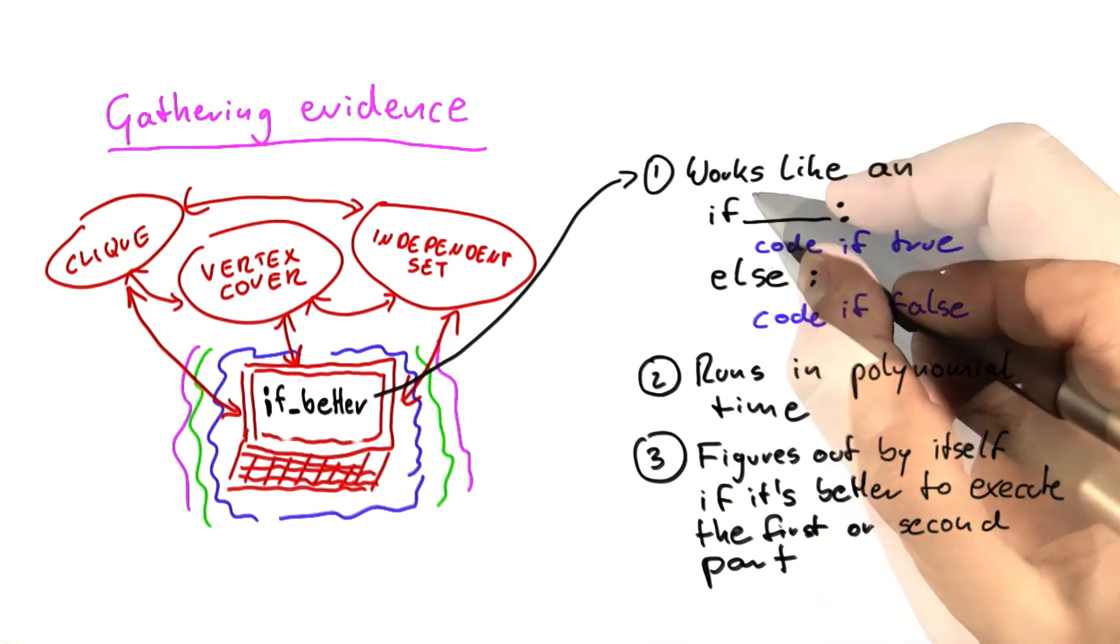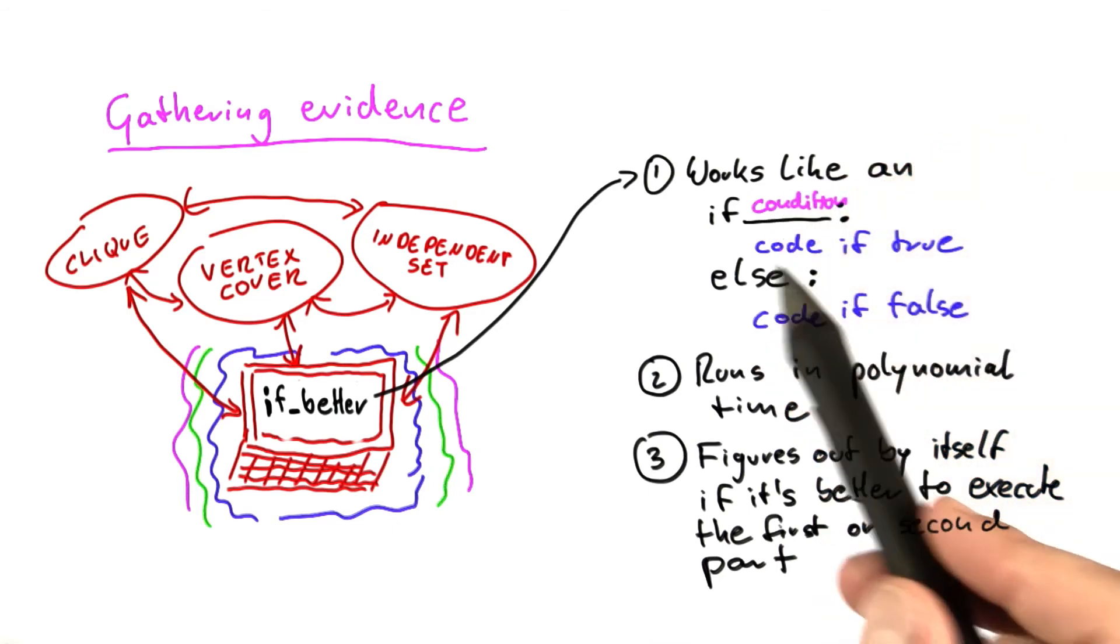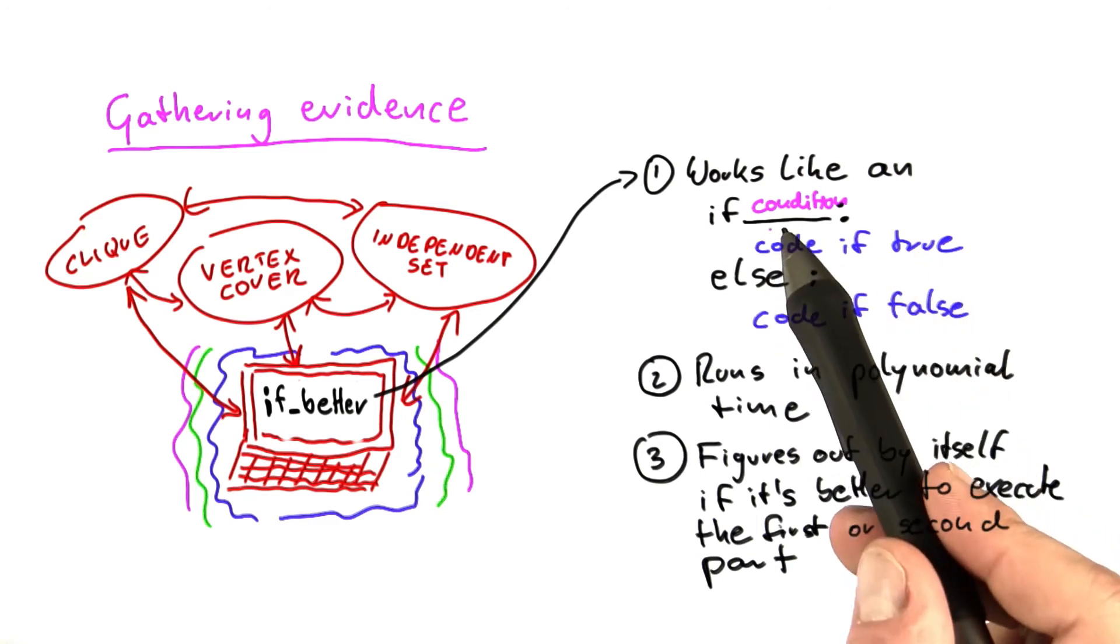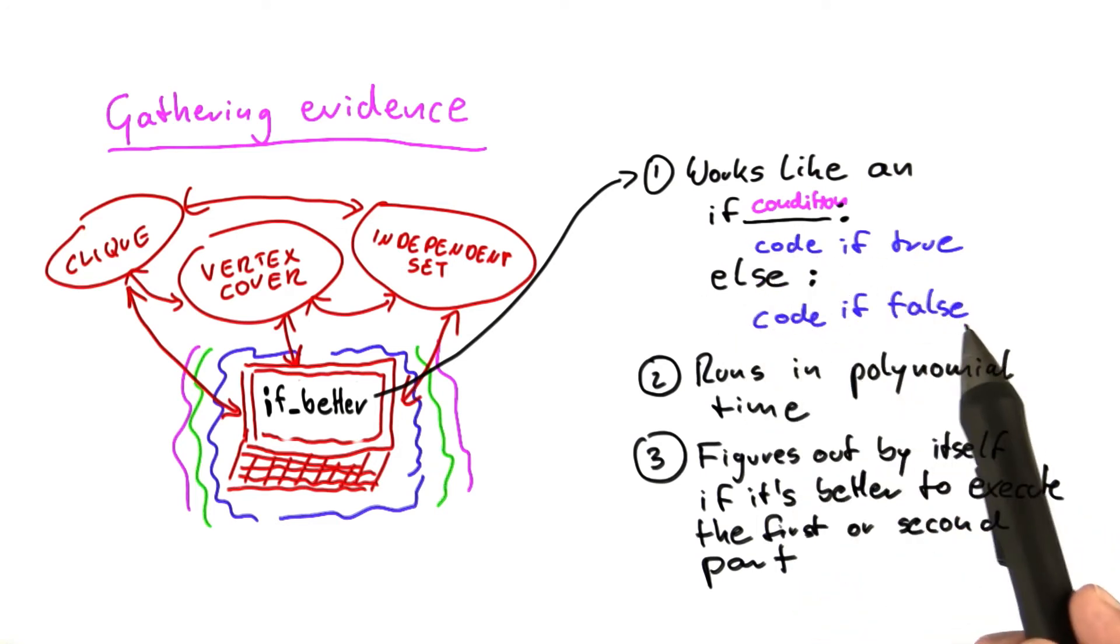Normally, when you have an if, you would have to specify some condition here so that if the condition is satisfied, this part of the code is executed. And if it's not satisfied, then this part here is executed.